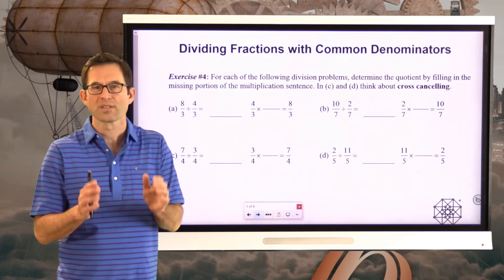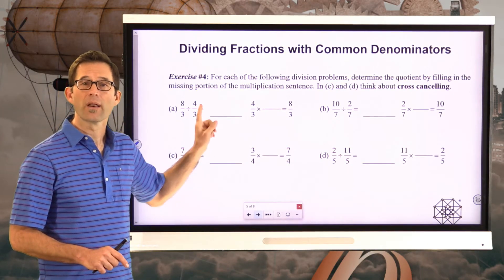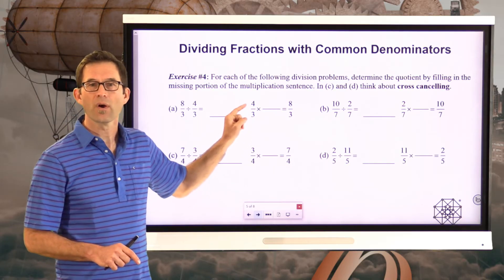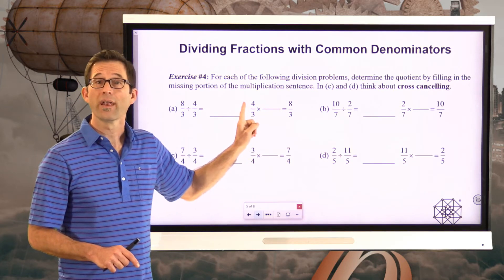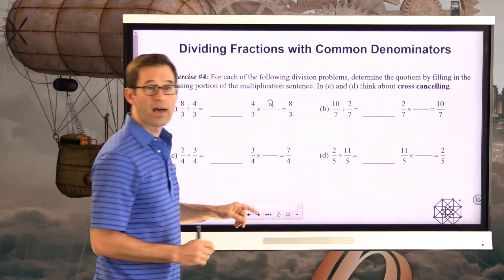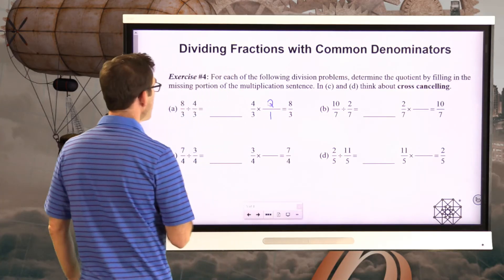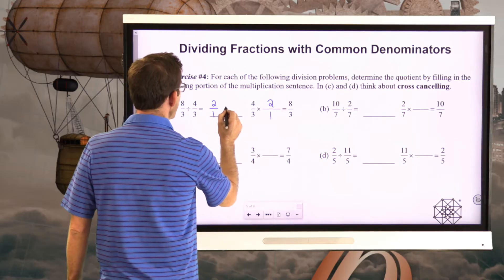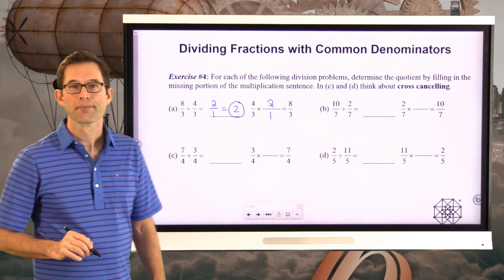In letter A, we have 8 thirds divided by 4 thirds. That means I want to figure out what I need to multiply 4 thirds by to get 8 thirds. I'd have to multiply 4 by 2, and 3 by 1. Therefore, 8 thirds divided by 4 thirds is 2 firsts, but we should leave it as just 2. Never leave something like 2 over 1 — 2 over 1 is the same as the number 2.